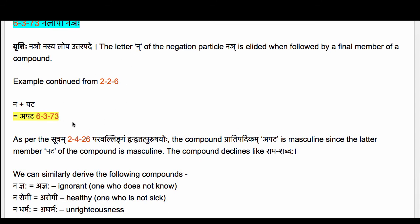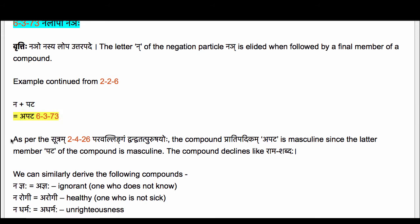Now we apply 6.3.73 to elide the letter Na of the particle Nyai. So we get 'a Pata' as the compound Pradipadikam. As per Sutram 2.4.26 Paravalingan Dvanvatat Purushayoho, the compound Pradipadikam 'a Pata' is masculine, since the latter member Pata of the compound is masculine. It declines like Rama Shabdaha.